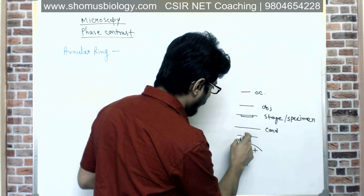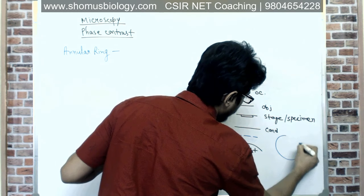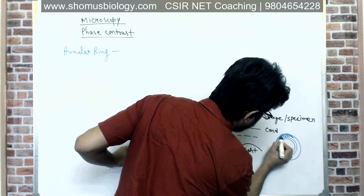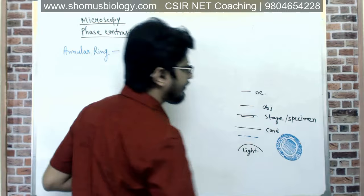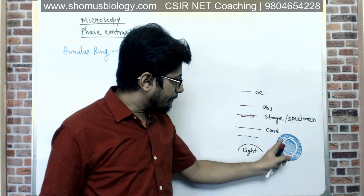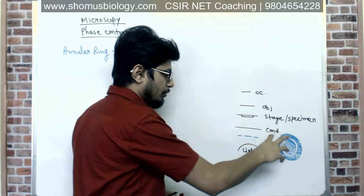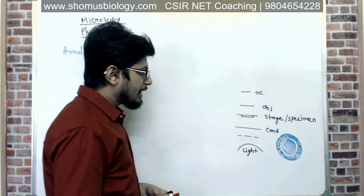The annular ring looks something like this in 3D: the ring shape itself, with a surrounding portion that is totally black and made of material that will not allow any light to pass — it absorbs the light. The blank or clear region is made of material that allows light to pass through it. So two types of materials make up this annular ring, and in side view, the blank areas are where light can pass.